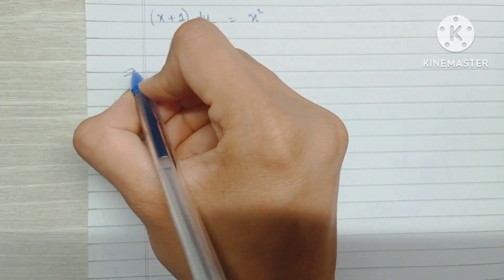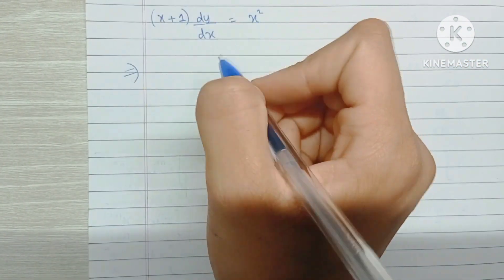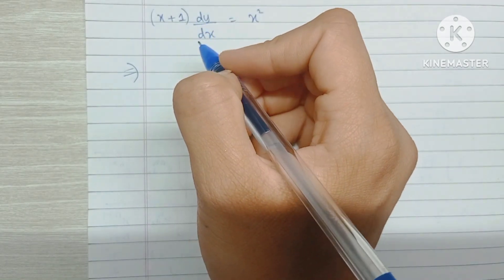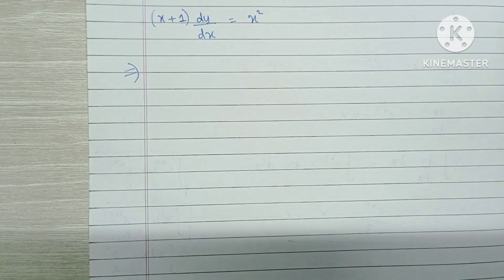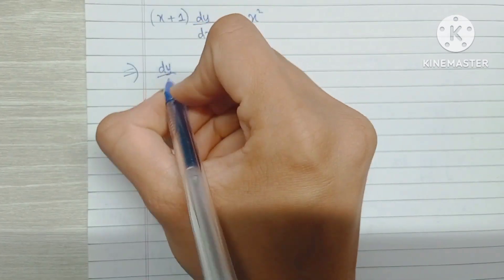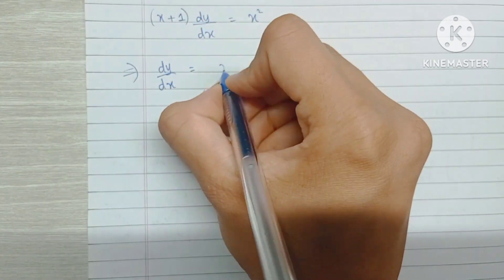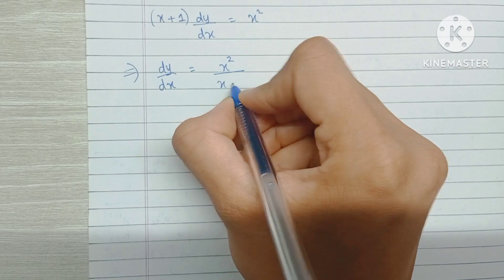So first what I'm going to do is, I'll take x plus 1 to the right side so that we're only left with the differential term on the left side. So we have dy by dx is equal to x squared upon x plus 1.